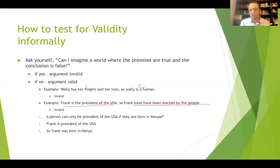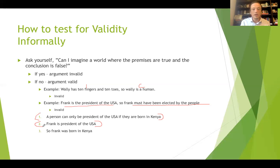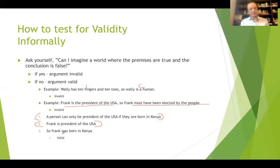Here's another one: a person can only be president of the United States if they are born in Kenya; Frank is the president of the United States; so Frank was born in Kenya. Now notice — not true, and also not true. But can you imagine a world where those premises are both true, yet Frank was not born in Kenya? No, you can't. So it's a valid argument — even though the premises are false. That's how you test for validity.